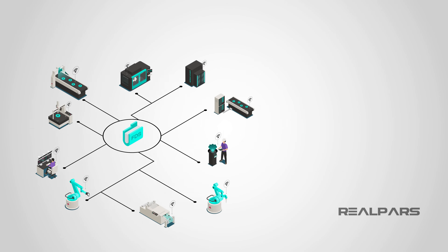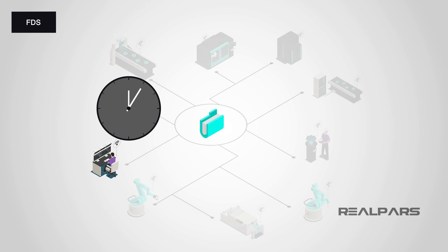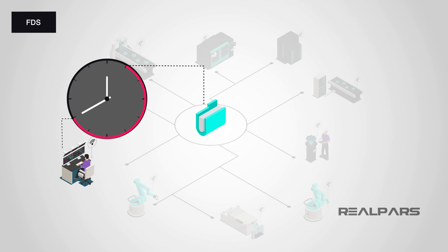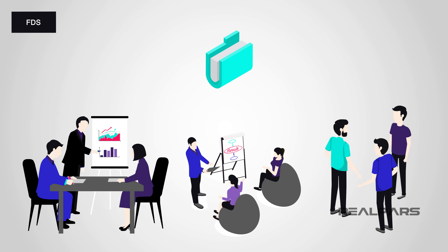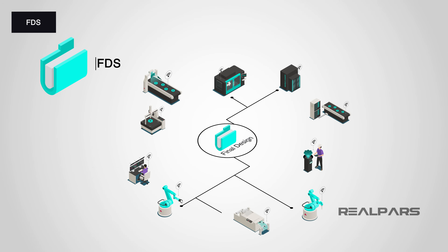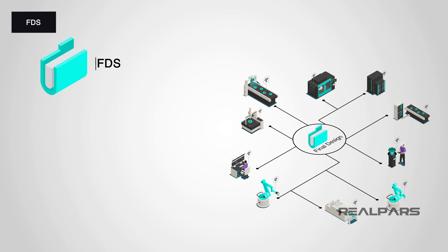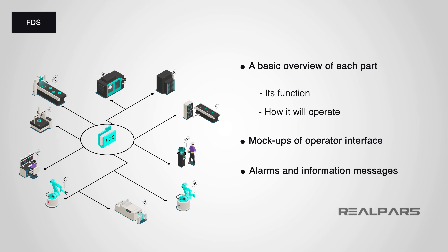To recap: a Functional Design Specification, or FDS, is a document describing how a process or control system will operate. One of the main reasons to have an FDS is to establish documented consensus on what the system is to achieve before producing drawings or writing PLC code. It is passed between team members, customers, and stakeholders for review until signed off. During testing, the actual behavior of the final system is compared against the expected behavior as defined in the Functional Specification. The FDS will typically contain a basic overview of each main part of the system, its function, and how it will operate.